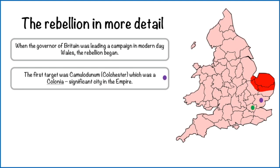The first target was Camulodunum, which was the former Trinovantean capital. Tacitus, a Roman historian, said: 'It was against the veterans that their hatred was most intense' — referring to the Celtic people from that tribe — because they had taken over the Trinovantean lands and forced the people out. Think about it — how would you feel? The city was destroyed and the people were killed, brutally. The temple fell last after two days and the statue of the Emperor was beheaded.